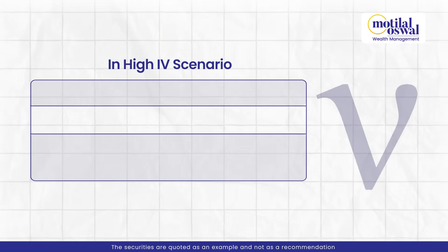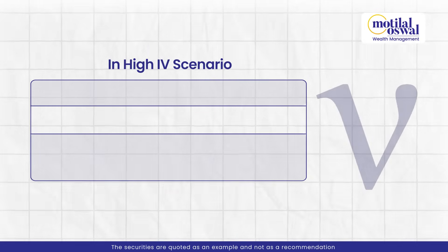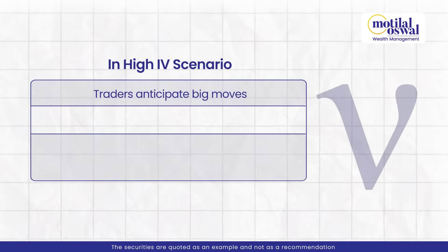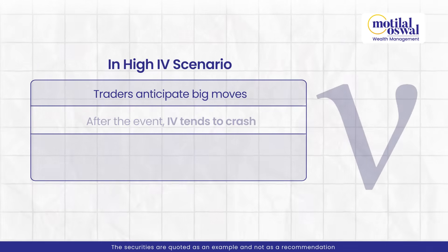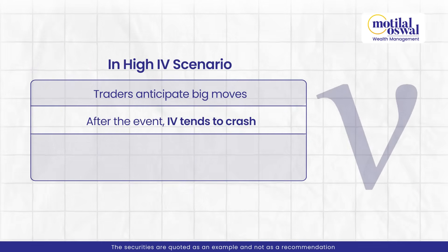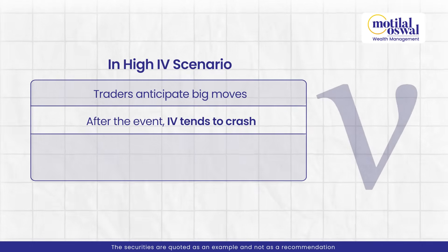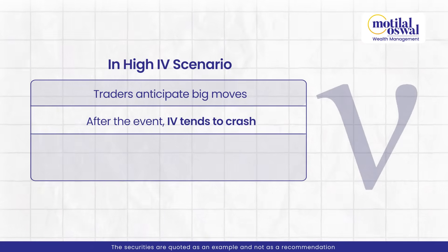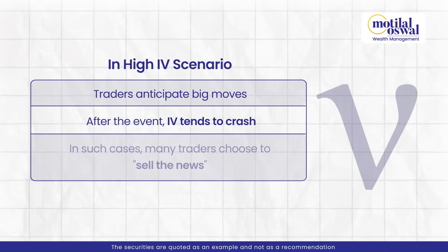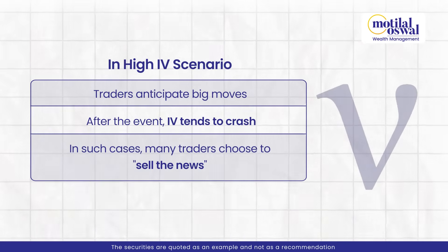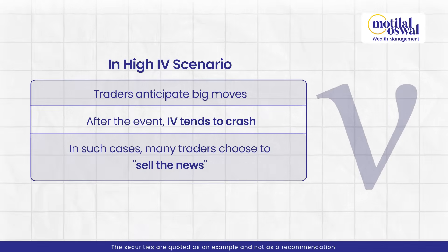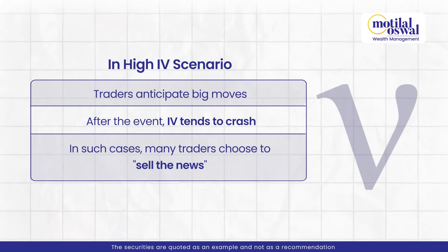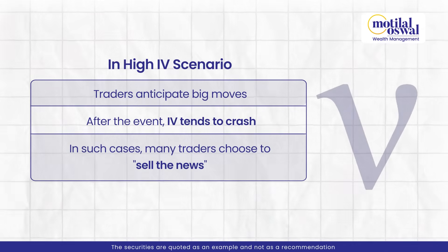In a high IV scenario, traders often anticipate big moves, but once the event passes, IV tends to crest. In this scenario, many traders sell the news, making Vega a key factor to watch.